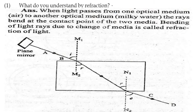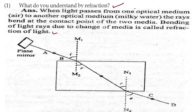What do you understand by refraction? When light passes from one optical medium, such as air, to another optical medium, such as water, the rays bend at the contact point of the two media. So the bending of light rays due to change of medium is called refraction of light. You can see the light entering and bending — this is angle of incidence, this is angle of refraction, and this is angle of emergence.